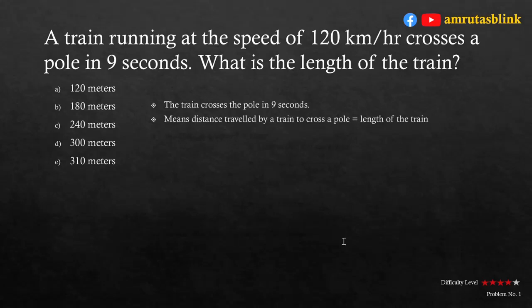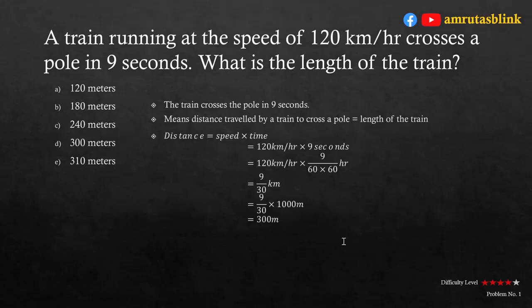It is given that the train is running at a speed of 120 km per hour and takes 9 seconds to cross the pole. The speed is given in km per hour, all answer options are in meters, and the time is in seconds. So we need to convert the speed from km per hour into meters per second. We know the formula: distance equals speed into time.